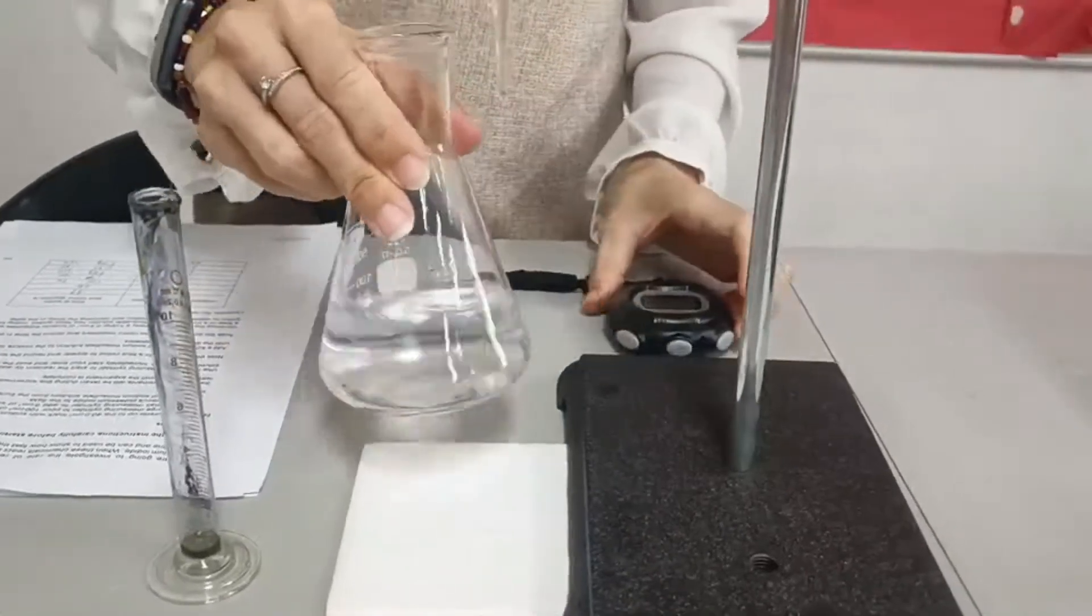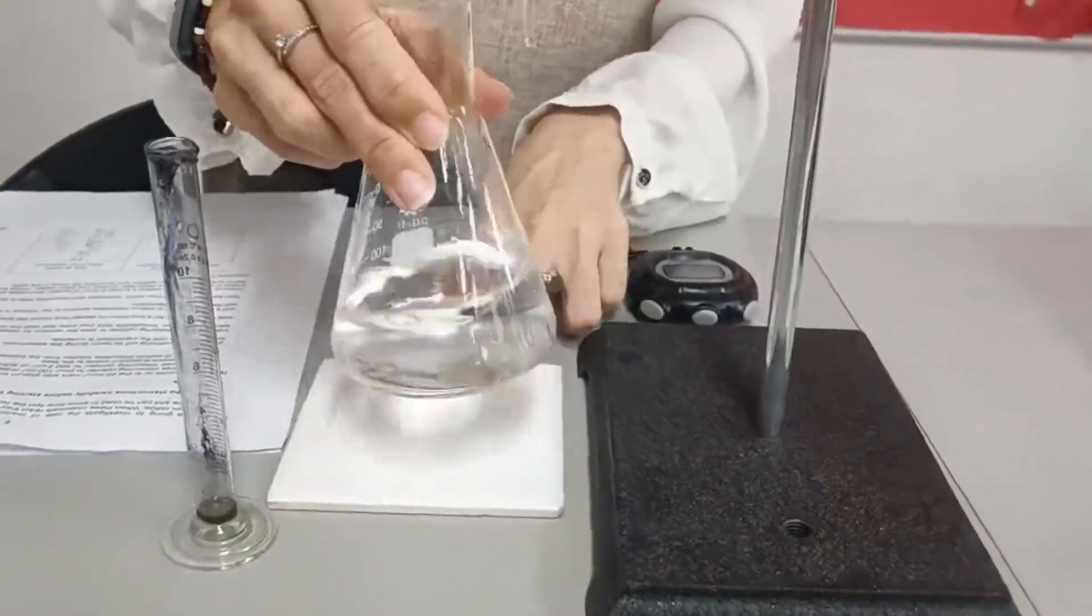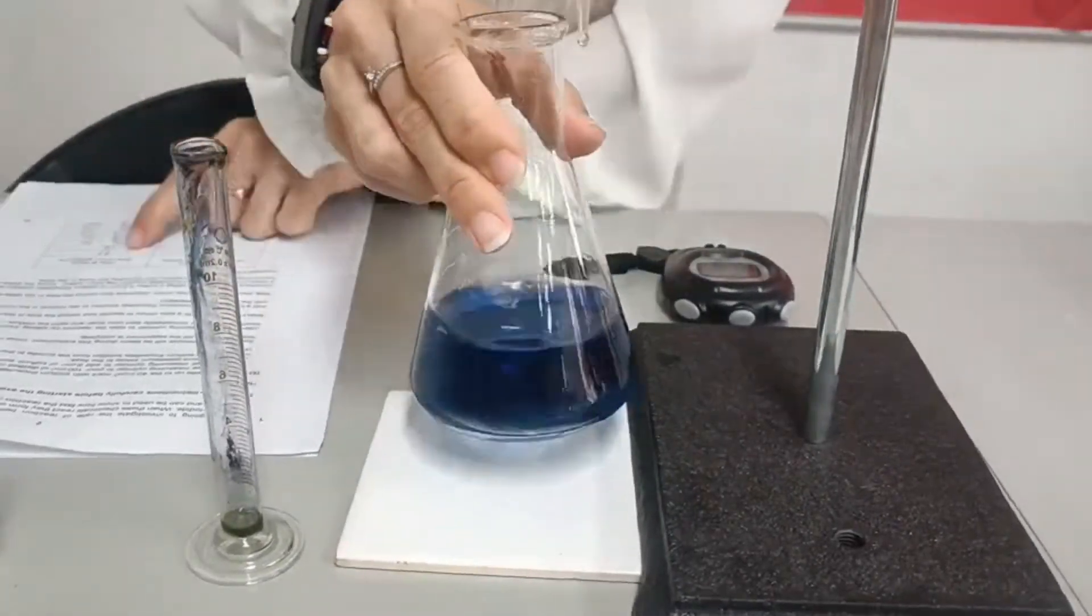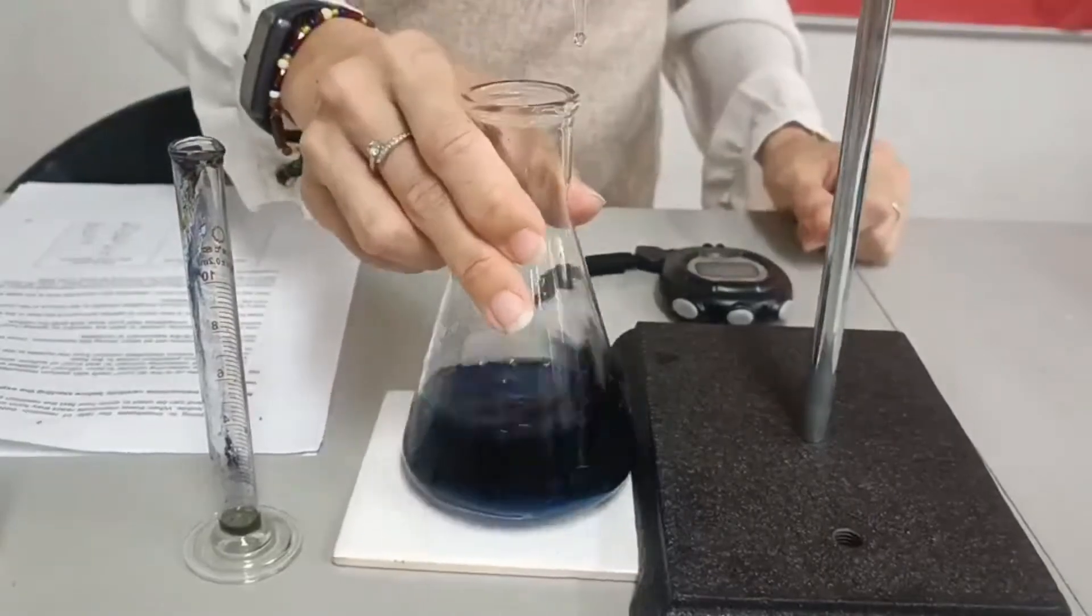The moment it turns blue color, you have to stick down the reading and record the time in your column. That's your first.